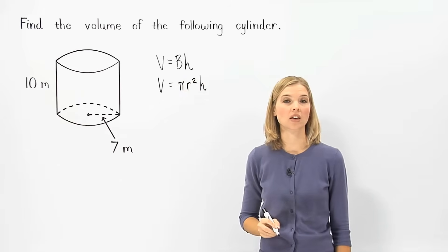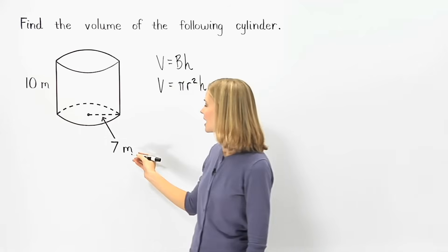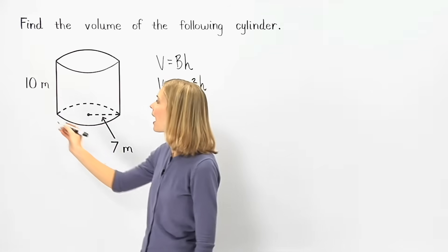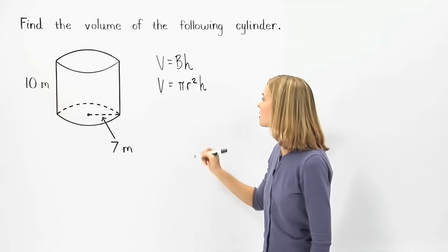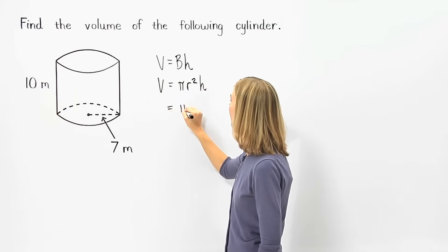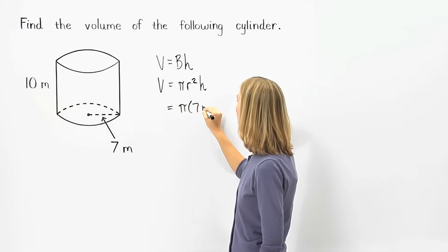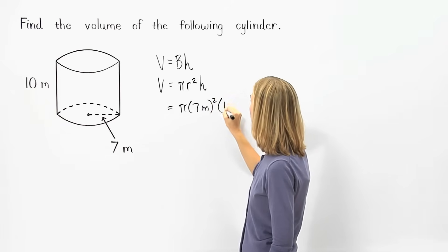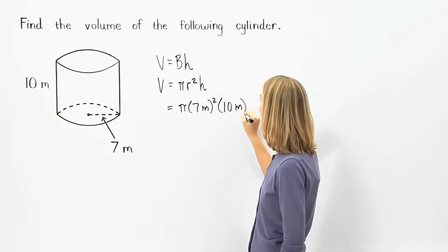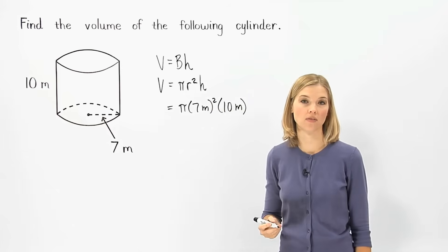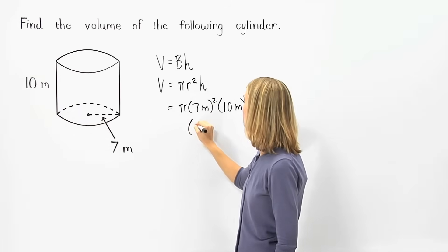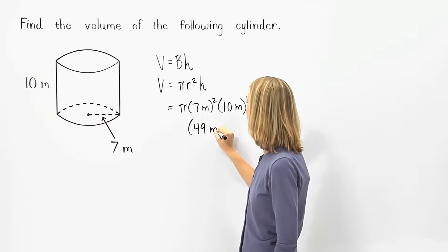So, to find the volume of the given cylinder, since the radius is 7 meters and the height is 10 meters, we can plug this information into the formula to get pi times 7 meters squared times 10 meters. Remember that 7 meters squared is the same thing as 7 meters times 7 meters, which equals 49 meters squared.